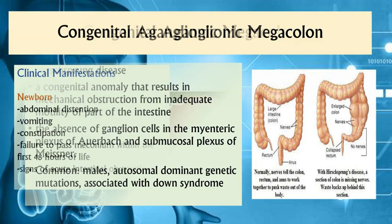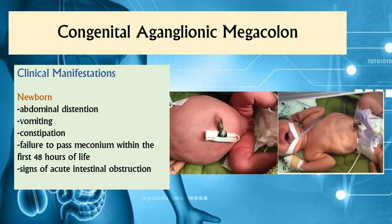Common signs and symptoms in newborns include abdominal distension, vomiting, and constipation. They are also unable to pass meconium within the first 48 hours of life, and signs of acute intestinal obstruction such as absent or decreased bowel sounds may be observed.